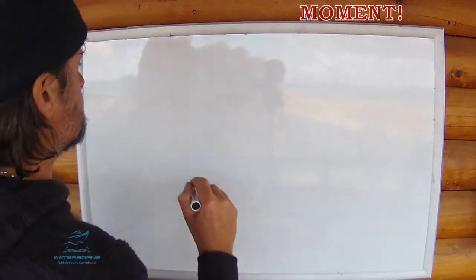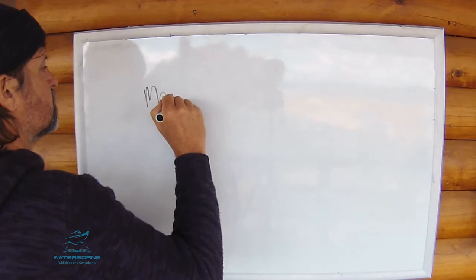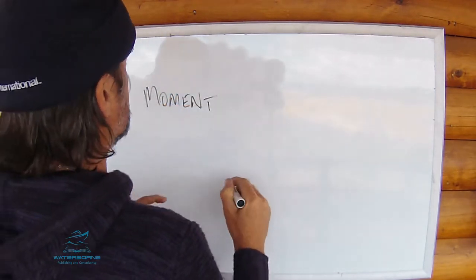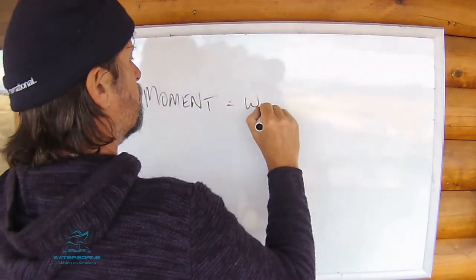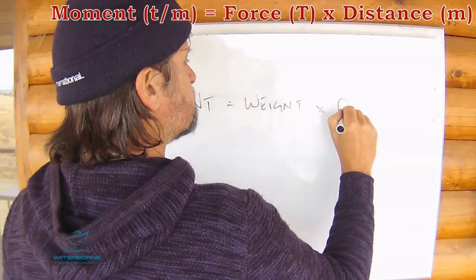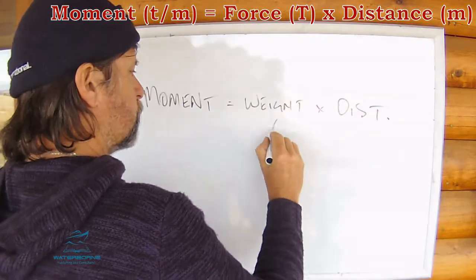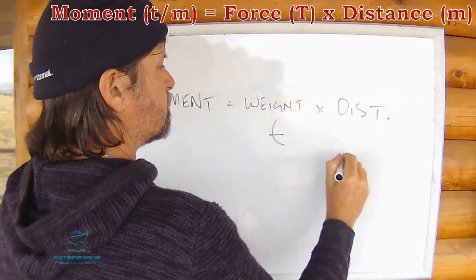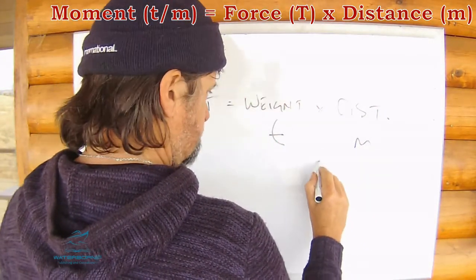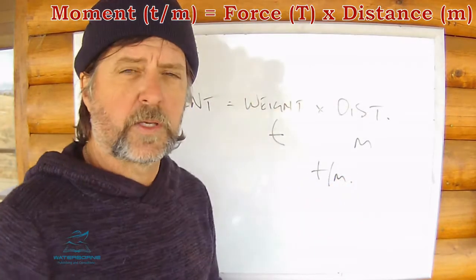A moment can be represented in this way. It's a rotational force — a moment equals weight times distance. A weight will measure in tonnes, distance will measure in metres, so the unit of measurement for a moment is tonne metres.